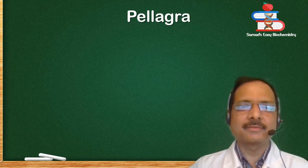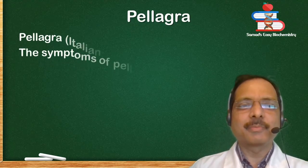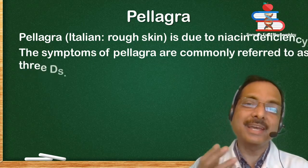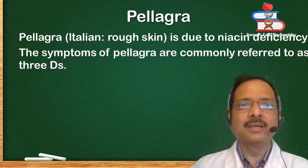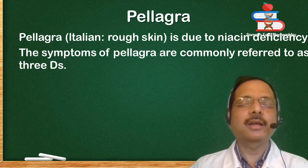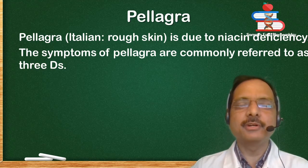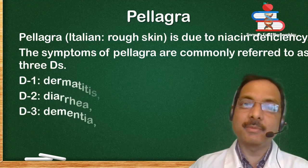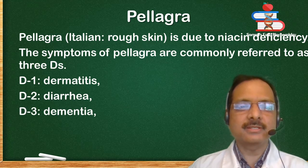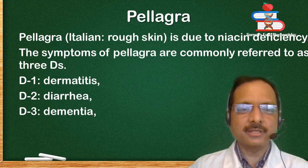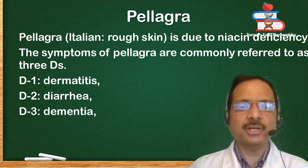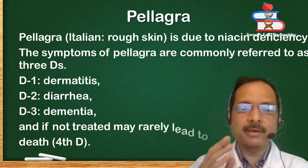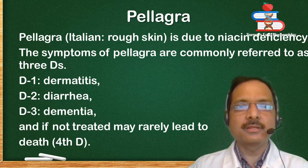Pellagra — obtained from an Italian word for rough skin. It is due to niacin deficiency. The symptoms of pellagra are commonly referred to as the 3 Ds: 1. Dermatitis, 2. Diarrhea, 3. Dementia. If not treated, it may rarely lead to death — sometimes referred to as a 4th D.